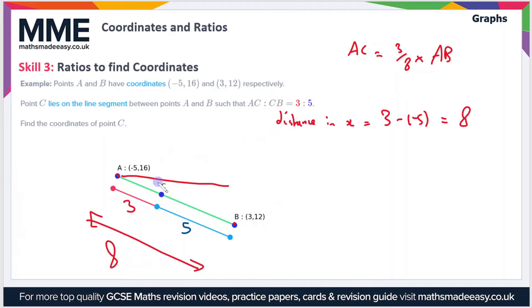Now to find the distance from A to C in x, we just have to multiply this value by three-eighths to get this distance. The distance in x from A to C is therefore three-eighths times 8, which is just 3 because the 8s cancel.